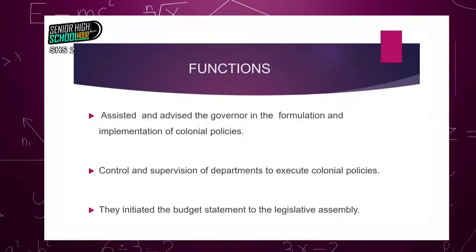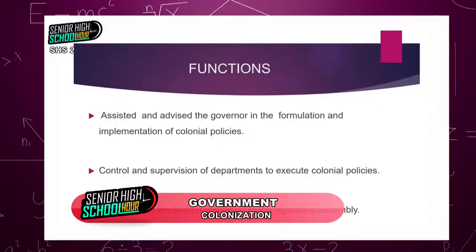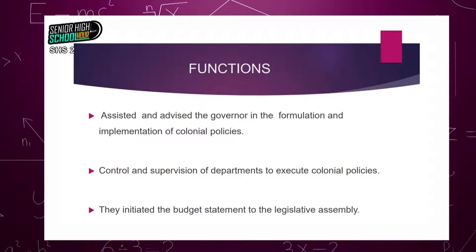The functions of the executive council were: they assisted and advised the governor in the formulation and implementation of colonial policies; they controlled and supervised departments to execute colonial policies — for example, the director of medical services, officer commanding the local troops, and the attorney general were all heads of departments; and they initiated the budget statement to the legislative assembly for approval.